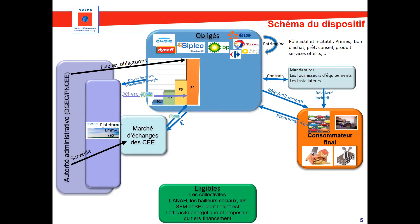Une fois l'opération réalisée et les économies d'énergie générées, il y a un dossier de preuve récupéré par l'obligé et délivré sur la plateforme EMI, en contrepartie duquel il y a une délivrance des C2E. Un obligé peut également acheter et vendre les certificats sur le marché pour remplir ses obligations sur la période. Il peut aussi déléguer ses obligations à des acteurs appelés des délégataires, qui sont environ une trentaine.